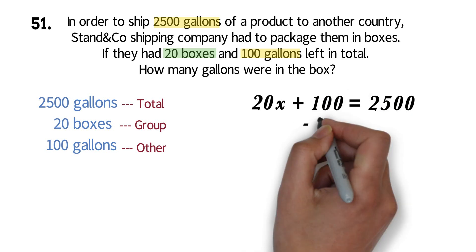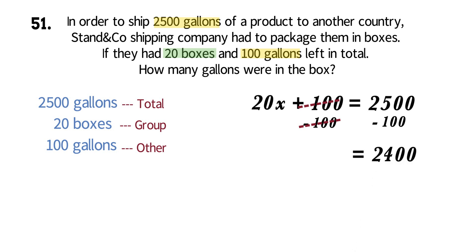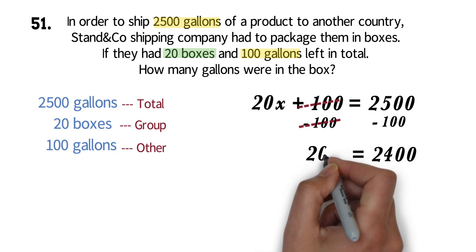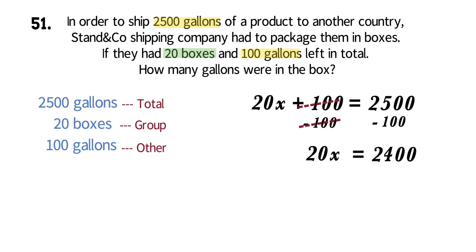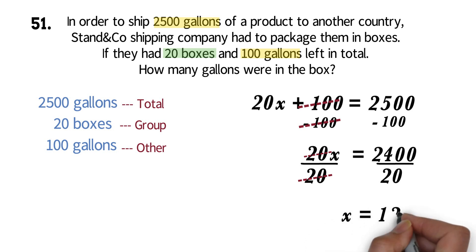We can now add the 100 gallons left to the equation and solve for the x in this two-step equation. Subtract 100 from both sides. These will cancel out. 2,500 minus 100 will be 2,400. We now have 20x equals 2,400. Divide both sides by 20. The 20 will cancel out. 2,400 divided by 20 will be 120. This means there were 120 gallons in each box. The hard part of this question is to be able to pull out the values from the word problem.